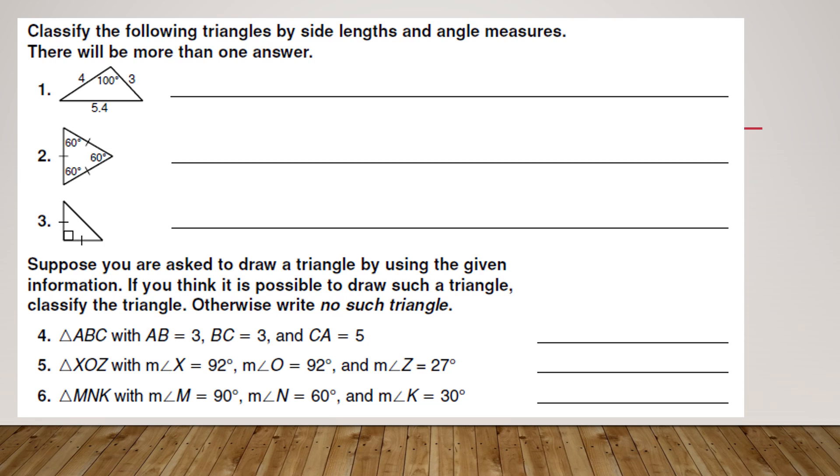For this one, we're going to classify it by side lengths and angle measure. By side lengths first, you can see that they're all different. So it would be scalene, and we've got an angle greater than 90. We're going to classify this as a scalene obtuse triangle.